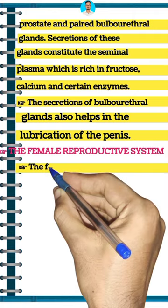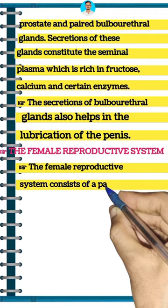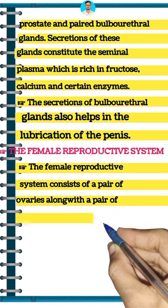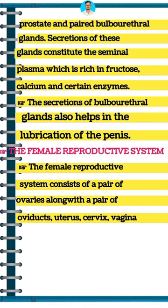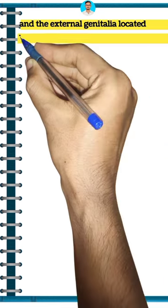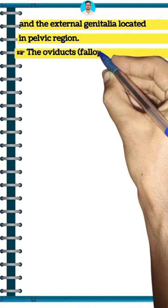The female reproductive system consists of a pair of ovaries along with a pair of oviducts, uterus, cervix, vagina and the external genitalia located in the pelvic region. The oviducts, or fallopian tubes,